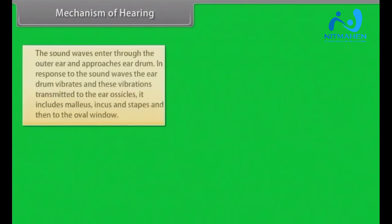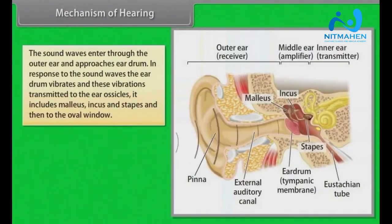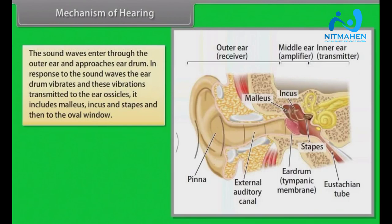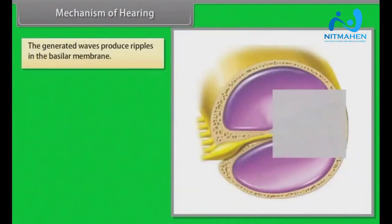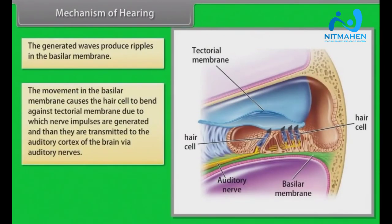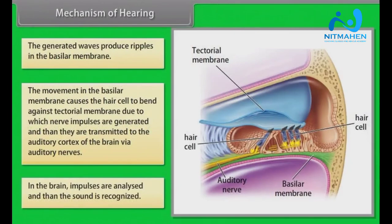Sound waves enter through the outer ear and reach the eardrum. In response, the eardrum vibrates and these vibrations are transmitted to the ear ossicles — malleus, incus, and stapes — and then to the oval window. Through the oval window, vibrations pass to the fluid in the cochlea, generating waves in the lymph. These waves produce ripples in the basilar membrane, causing the hair cells to bend against the tectorial membrane, generating nerve impulses. The impulses are transmitted to the auditory cortex of the brain via auditory nerves, where they are analysed and sound is recognised.